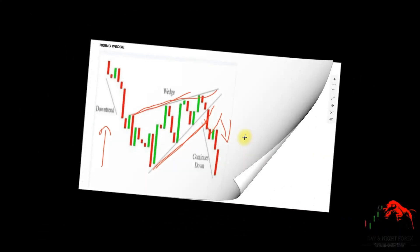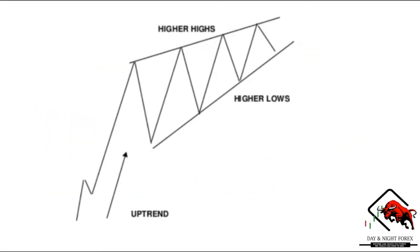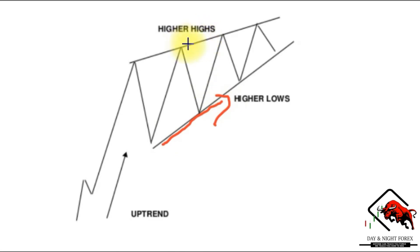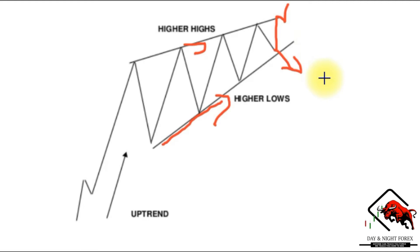Here is a clearer illustration. We are in an uptrend making higher highs and higher lows, but the higher lows are moving faster than the higher highs, making the support line more sloped than the resistance line at the top. Here we can expect a bearish reversal pattern in most cases, but it can also be a continuation pattern if it breaks out to the top side. It depends on market momentum and where buyers or sellers are deciding to take the price.